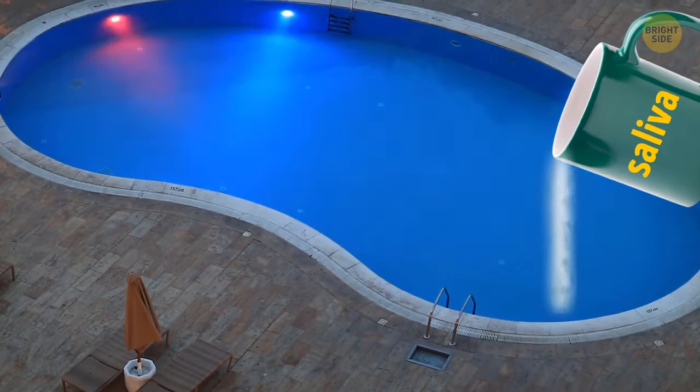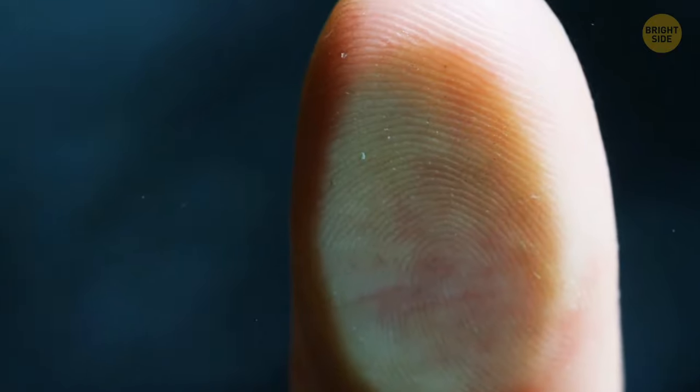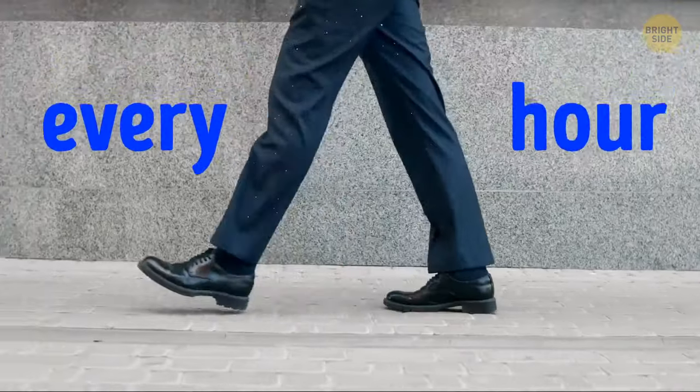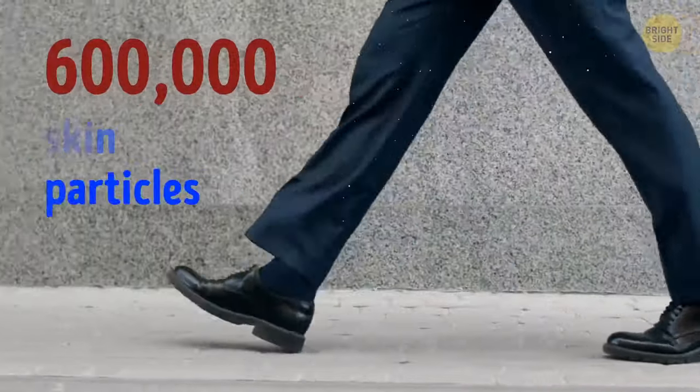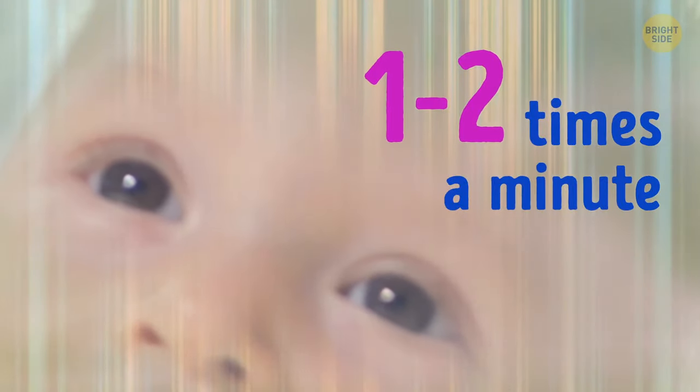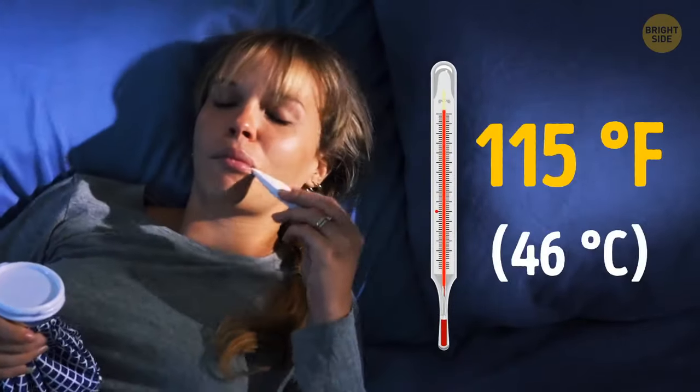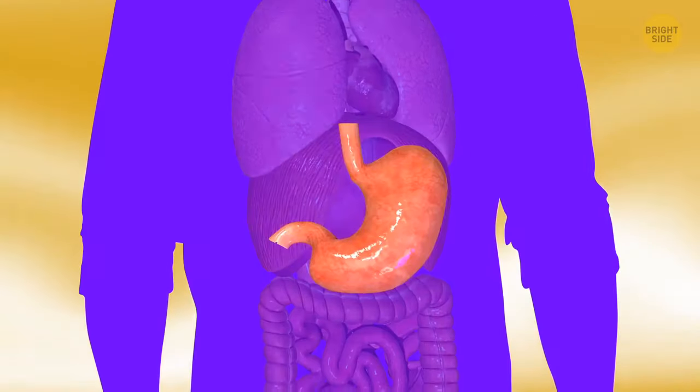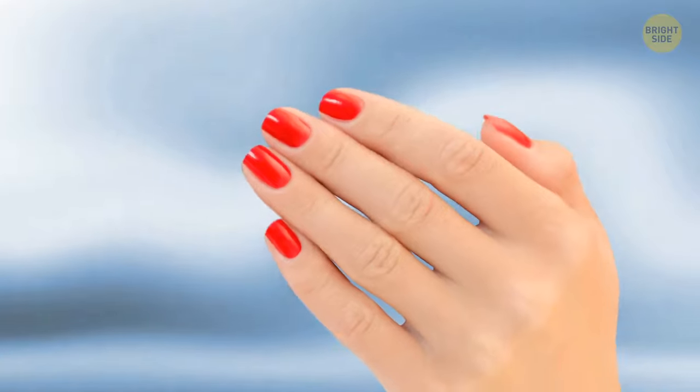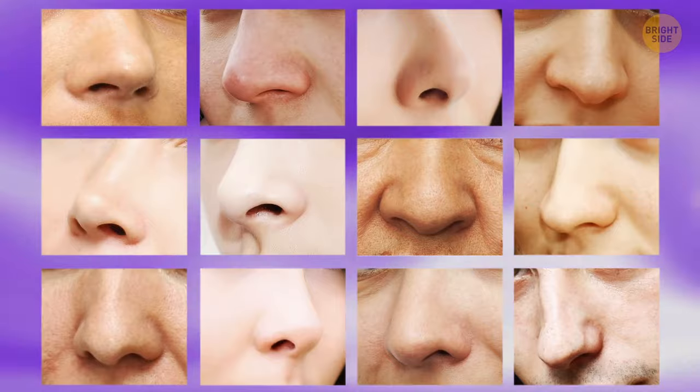If you took all the saliva you produced in a lifetime, you'd fill two swimming pools. Hey, anybody for a swim? Not only your fingerprint is unique, but your tongue print as well. Every hour, an average human loses about 600,000 skin particles. So, being flaky is not only emotional. Babies only blink once or twice a minute. If your eye were a camera, it'd be a whopping 576-megapixel one. The highest fever a human ever had was 115 degrees Fahrenheit. A human stomach can't really digest grass as easily as a cow's stomach. You'd need several stomachs for that. The fastest growing hair on your body is facial hair. The fastest growing nail is on your middle finger. The fastest growing nose on your face is on your face.